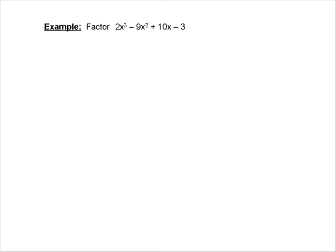So the possible values in this case, well, we can take the factors of the first one, plus or minus 1, plus or minus 3, and then we're going to have plus or minus 1 half, and plus and minus 3 halves.